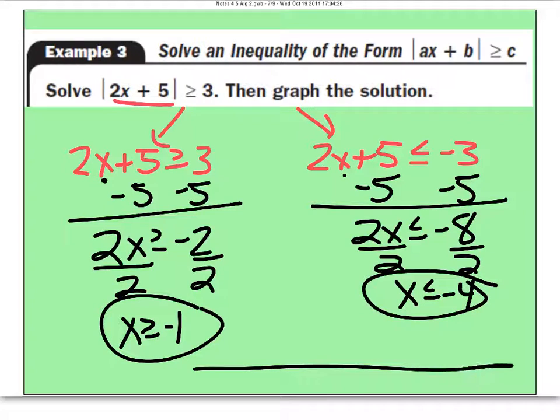So when I graph this one on a number line, I'll put 0 here, negative 1, 2, 3, negative 4, negative 5, so forth. Let's just start with this first one. I need a closed circle at negative 1, closed circle at negative 4.